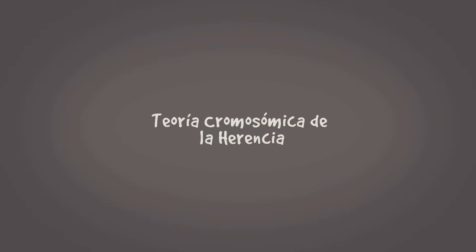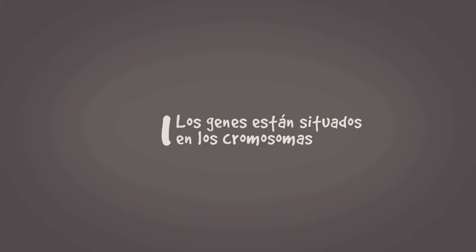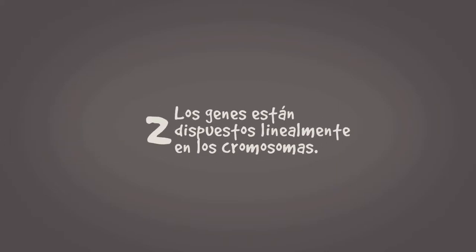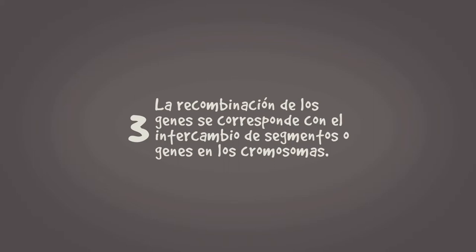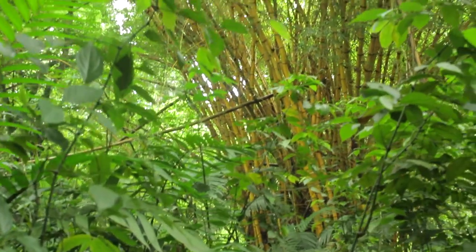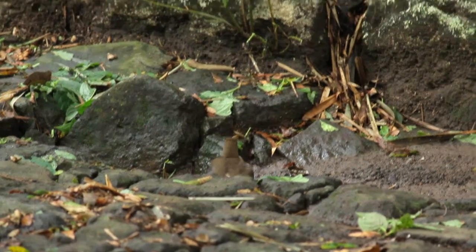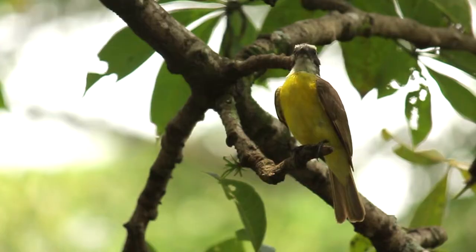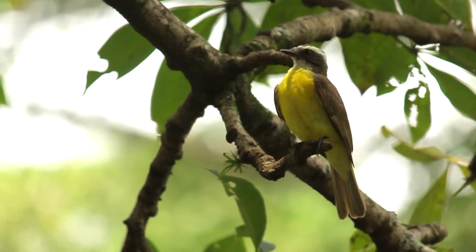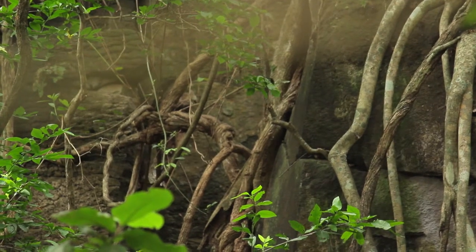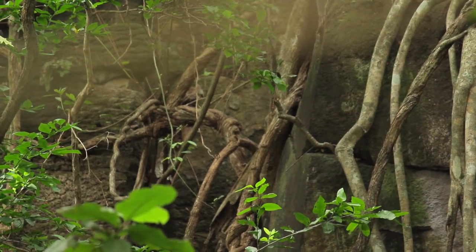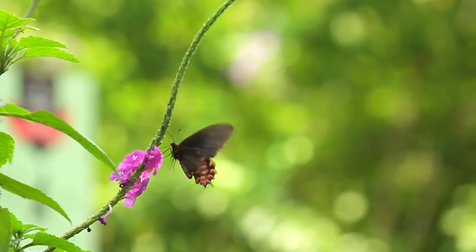Actualmente, las bases de la herencia descansan en la estructura del ADN. Una de ellas es la teoría cromosómica de la herencia, que posee tres postulados básicos: primero, los genes están situados en los cromosomas; segundo, los genes están dispuestos linealmente en los cromosomas; tercero, la recombinación de los genes se corresponde con el intercambio de segmentos o genes en los cromosomas. Para entender la herencia, hay que ver al gen desde la perspectiva funcional, como una región del ADN para determinar una característica. Así, un gen puede tener diferentes formas alternativas manifestadas en modificaciones concretas en la función de tal gen.